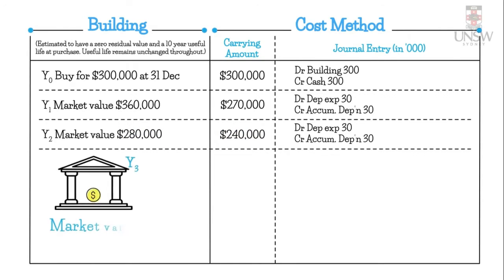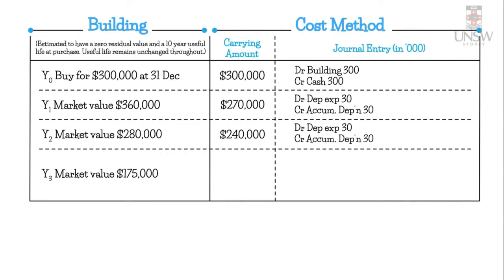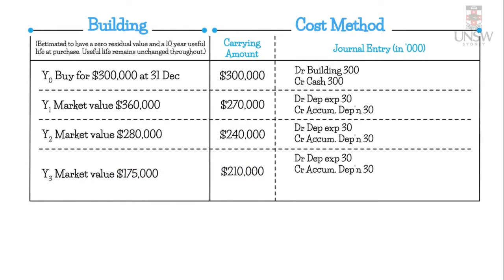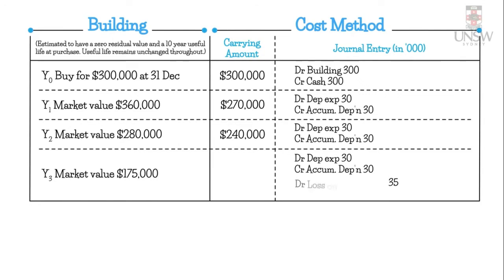In year three, the independent valuer records a market value of $175,000. We debit depreciation expense $30,000 and credit accumulated depreciation $30,000. Taking the $240,000 minus $30,000 gives a carrying amount of $210,000. This is higher than the market value of $175,000, so we have evidence of impairment. The impairment is $210,000 minus $175,000 = $35,000. Journal entry: debit loss on impairment $35,000 and credit allowance for impairment $35,000.